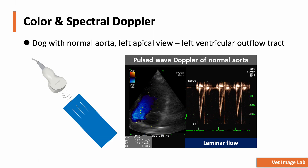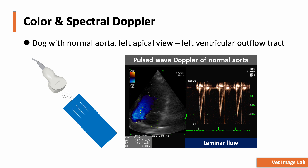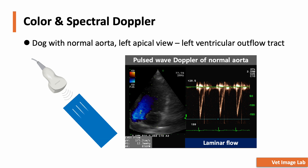Now let's look at color and spectral Doppler application using an example from a normal dog. We see a left apical four-chamber view focusing on the left ventricular outflow tract. The color Doppler overlay shows a laminar flow pattern — smooth and organized blood flow. The blue color indicates that blood is flowing away from the transducer, which is expected in this view of the left ventricular outflow tract. On the right, we have the pulsed wave Doppler recording from the same location. The spectral Doppler waveform shows a clean narrow velocity profile, further confirming laminar flow. The peak velocity is around 175 centimeters per second, which is within the normal range for the left ventricular outflow tract.